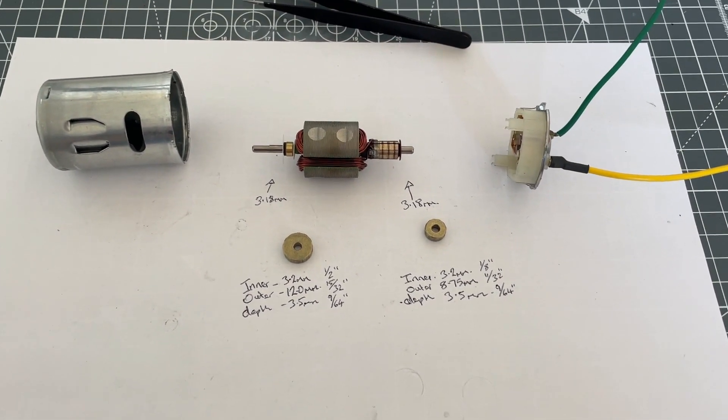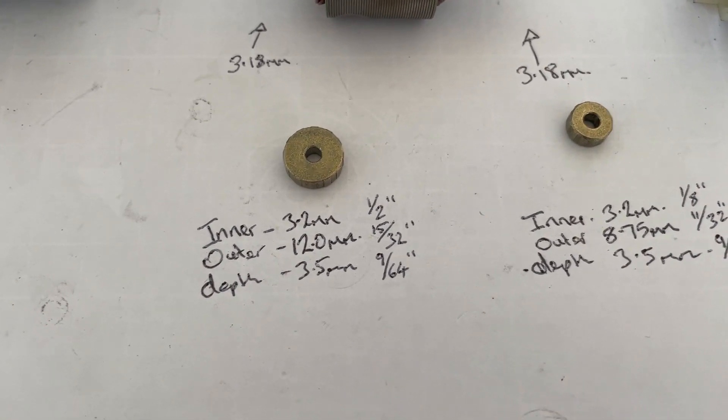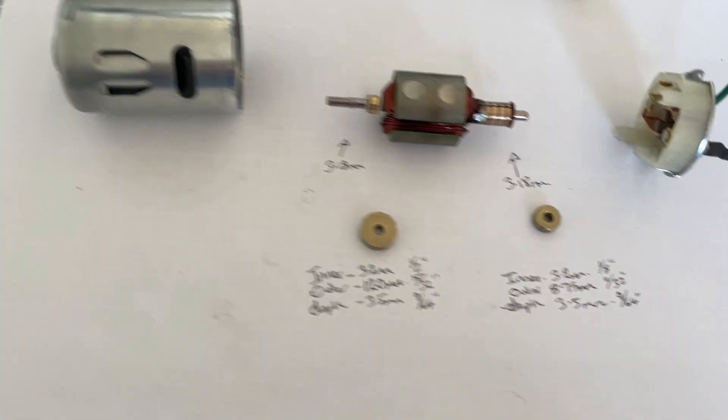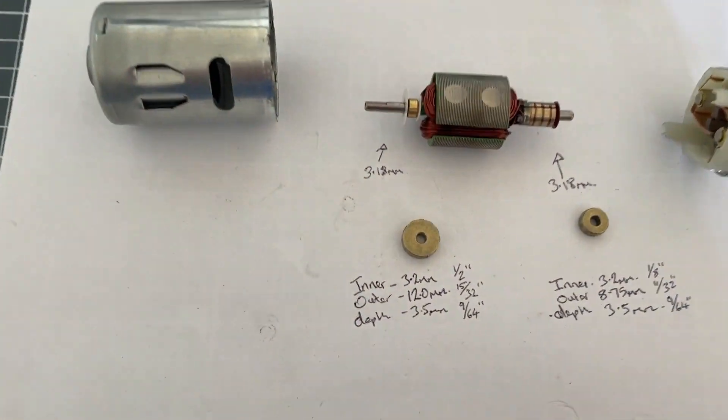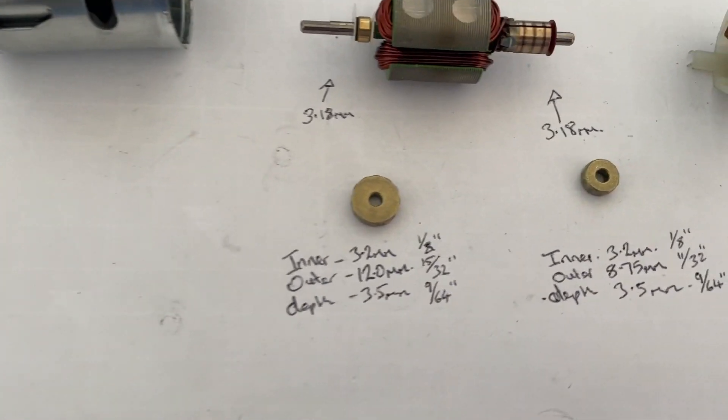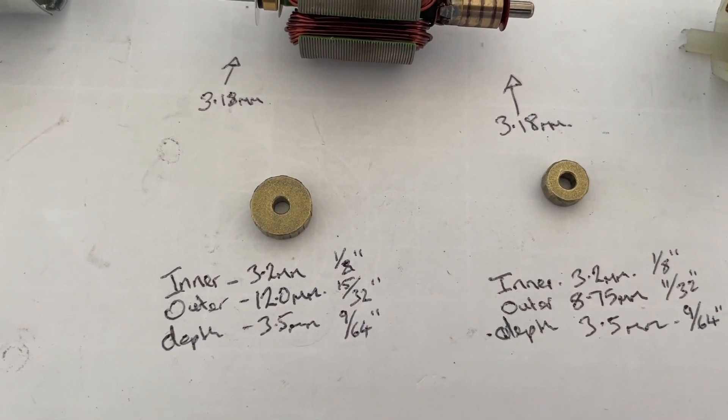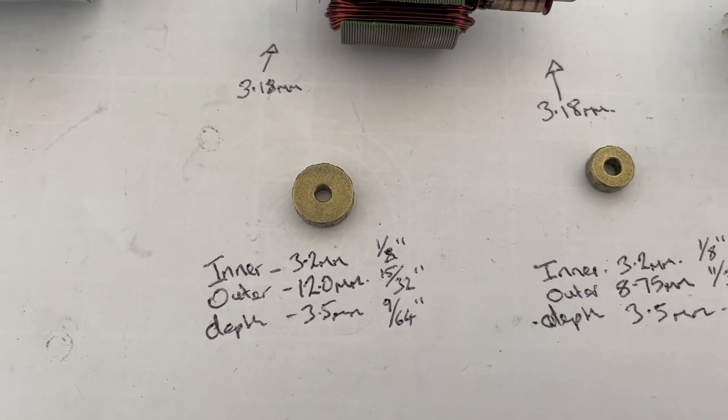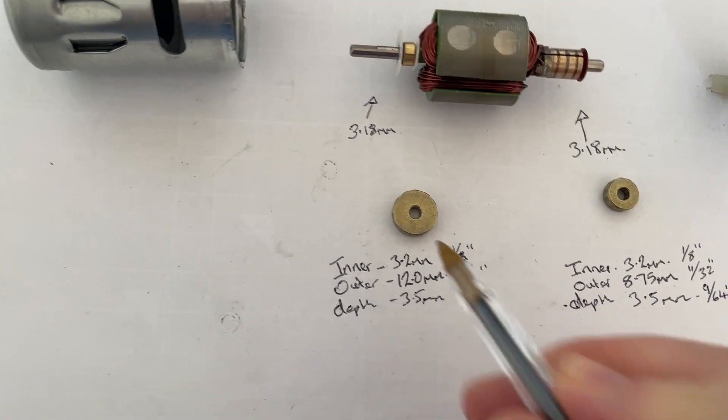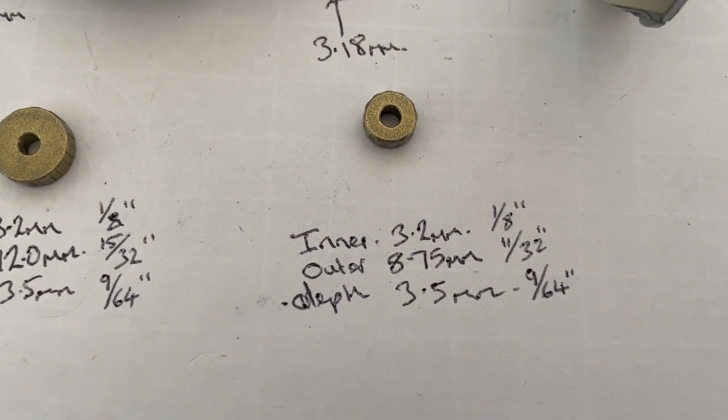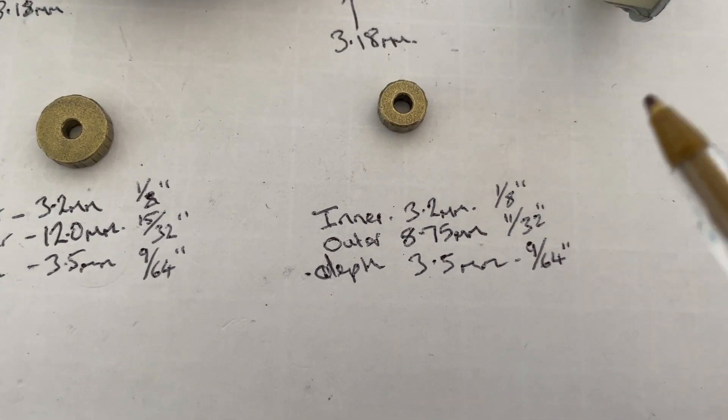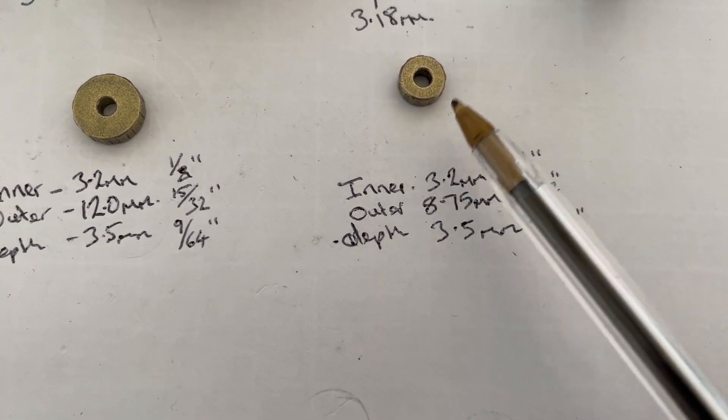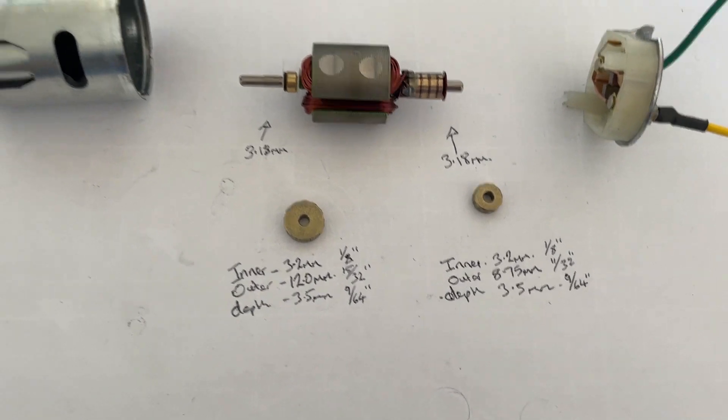So quick update. I had to quickly change these measurements of these bushings into imperial, and as you can see there, imperial measurements. Slight error there, should be one eighth, so that's one eighth of an inch internal, five and fifteen thirty-seconds on the external, and nine sixty-fourths for the width. And the same again on the small, one eighth of an inch is the internal measurement, and eleven thirty-seconds is the outer, and the width of the bearing, the bushing is nine sixty-fourths.